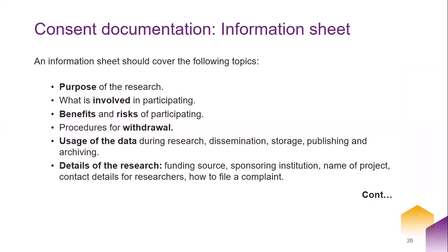Typically, written consent documentation includes an information sheet and a consent form signed by the participant. This division allows background information to be as detailed as necessary while keeping the signature form short and concise. The information sheet should cover: purpose of the research, what is involved in participating, benefits and risks, procedures for withdrawal, future uses of data such as storage, publishing, and archiving, and details of the research such as funding source, sponsor, institution, contact details, and how to file a complaint.